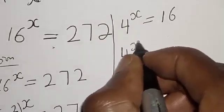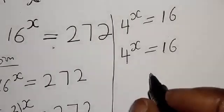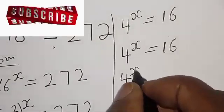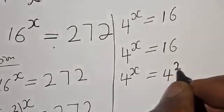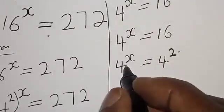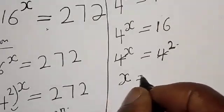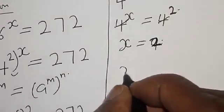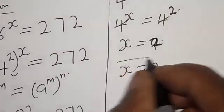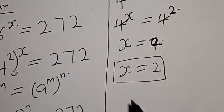We are left with 4 raised to power x is equal to 16, which is 4 raised to power 2. Since the bases are equal, we have x equals 2. Therefore our final answer is x equals 2. You can check to confirm if your answer is right or wrong — let's check.